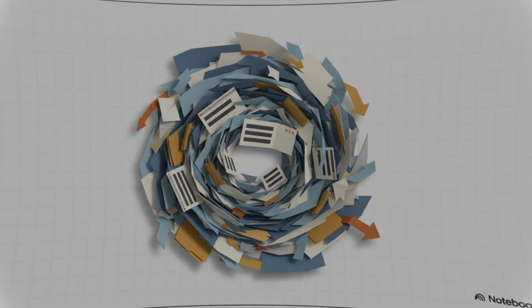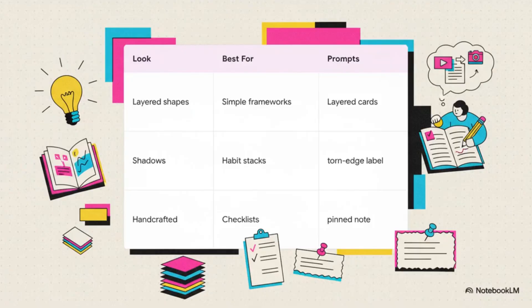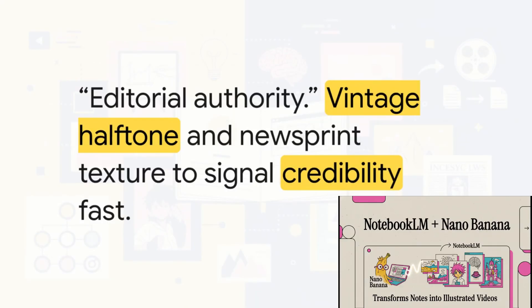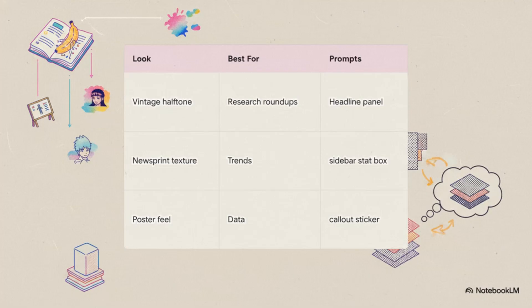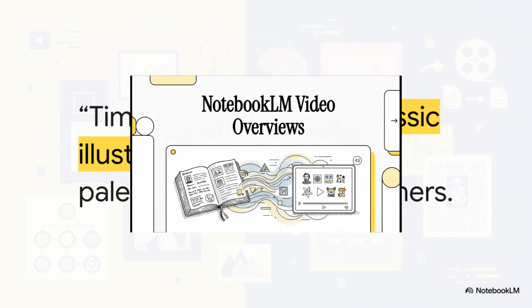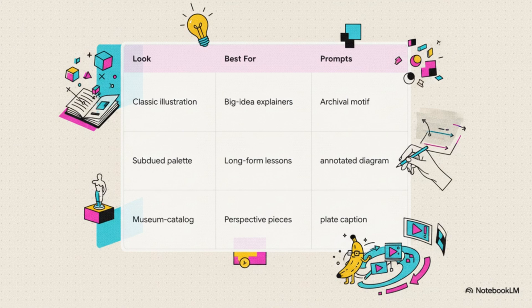Then there's Papercraft. It has this cool tactile feel that makes ideas memorable. Use this for checklists or summaries, anything you really want your audience to remember. Next is retro print — this one just screams editorial authority, like an old newspaper. It's your go-to when you're talking about data, trends, or citing research. And last up, heritage. This style gives off a classic, almost scholarly vibe. It adds some serious weight to those big, important explainers you're making.